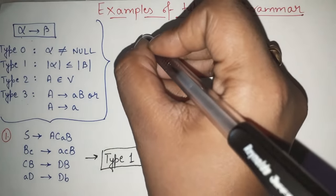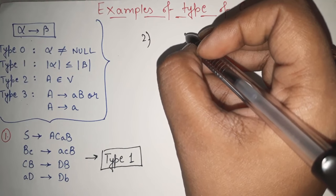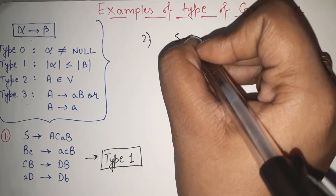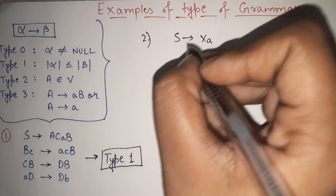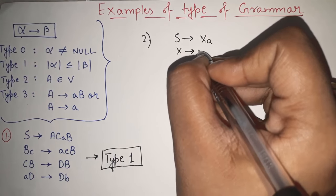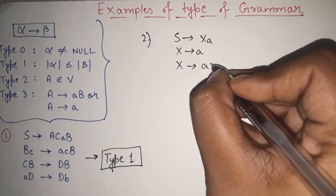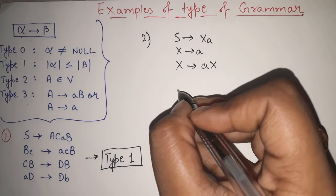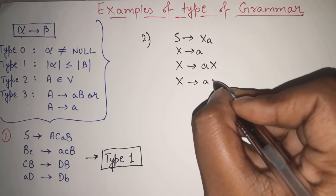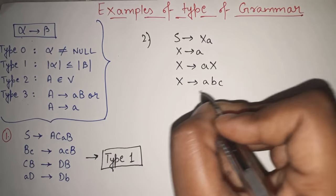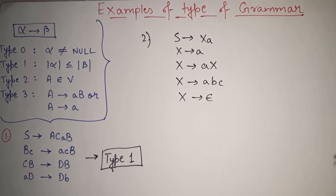Let us see another example. S gives XA; X gives small a; X gives small aX; X gives small a, small b, small c; and X gives null. This is the grammar and I have to identify its type.